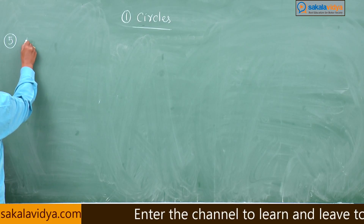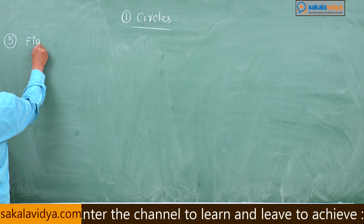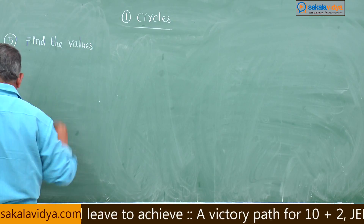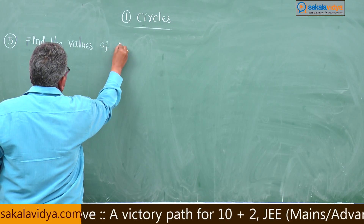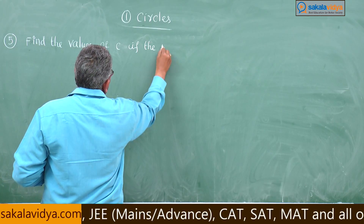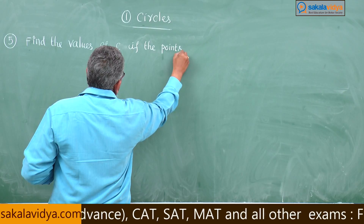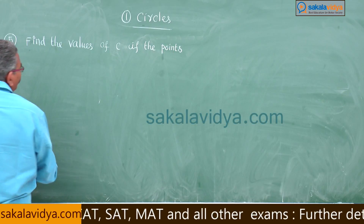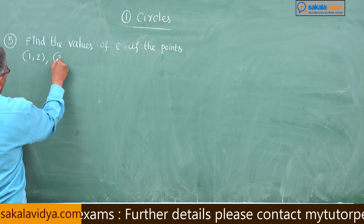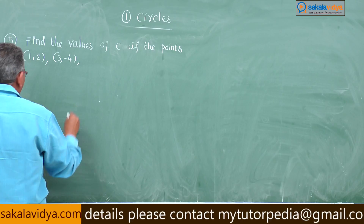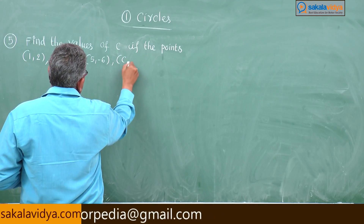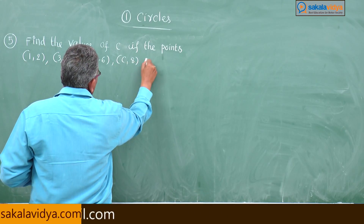Find the values of C if the points (1, 2), (3, -4), (5, -6), (C, 8) are concyclic.